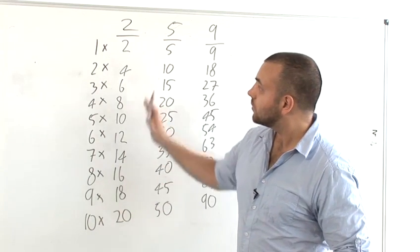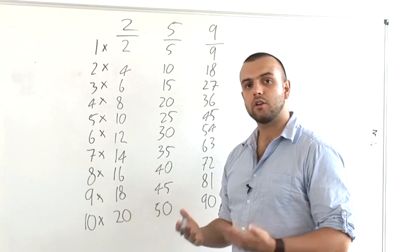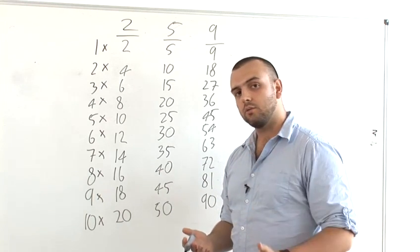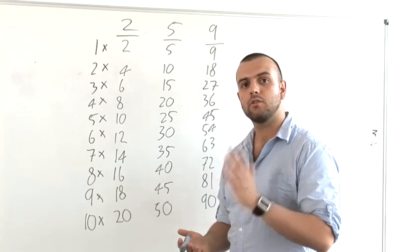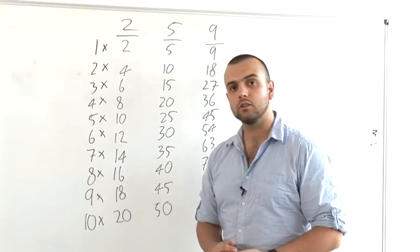For example, the two times table is very simple, but you can remember it as just by counting and missing out every other number. So starting at zero, you miss the one and go to two, miss the three and go to four, miss the five and go to six. That way it can be tied into counting and learned very quickly.